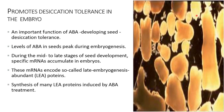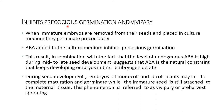Promote desiccation tolerance in the embryo: an important function of abscisic acid is developing seed desiccation tolerance. The level of abscisic acid in the seed peaks during embryogenesis, during mid to late stages of seed development. Specific mRNAs accumulate in the embryo; these mRNAs encode late embryogenesis abundant (LEA) proteins, and synthesis of many LEA proteins is induced by abscisic acid treatment.